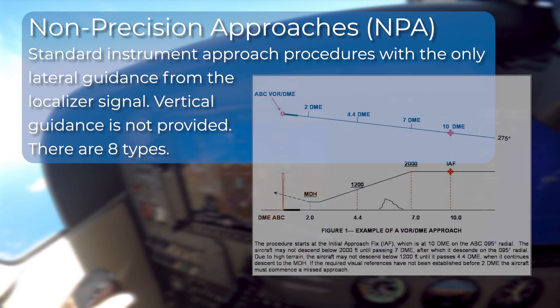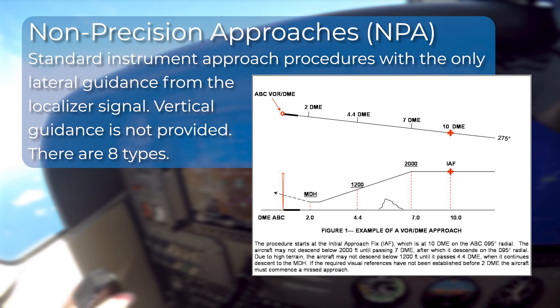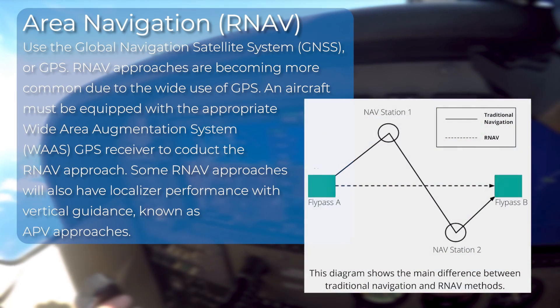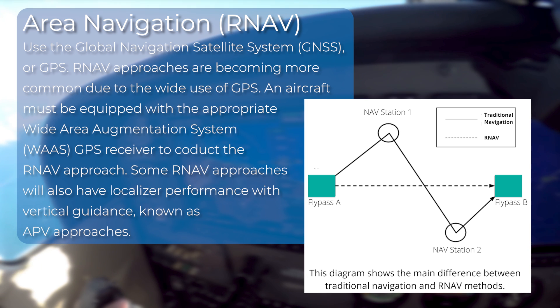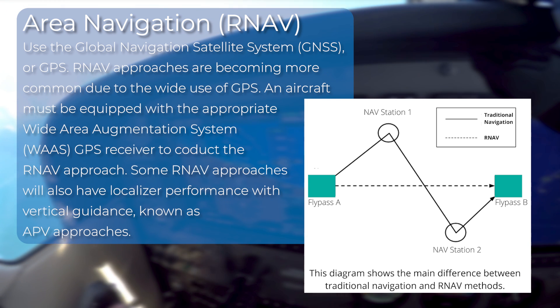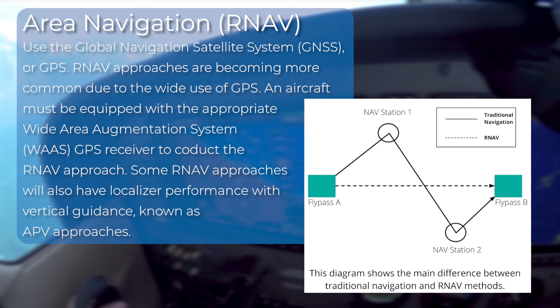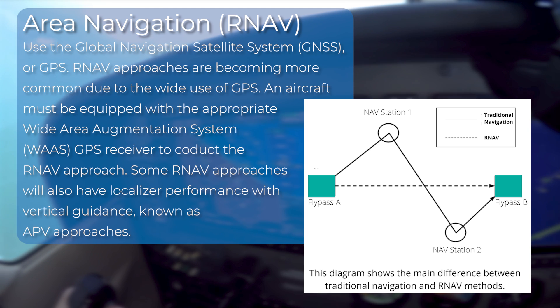Non-precision approaches are standard instrument approach procedures with only lateral guidance from the localizer signal — vertical guidance is not provided. There are eight types. Area navigation approaches use the Global Navigation Satellite System, or GPS. RNAV approaches are becoming more common due to the wide use of GPS. An aircraft must be equipped with the appropriate Wide Area Augmentation System GPS receiver to conduct the RNAV approach. Some RNAV approaches will also have LPV — localizer performance with vertical guidance — known as APV approaches.